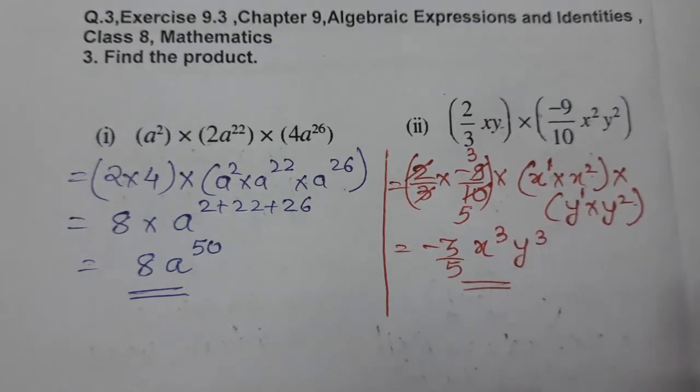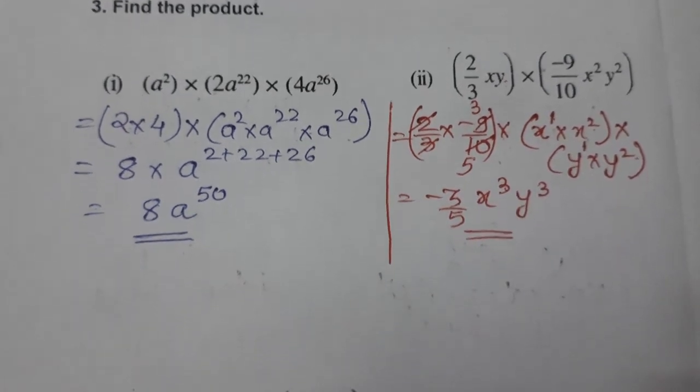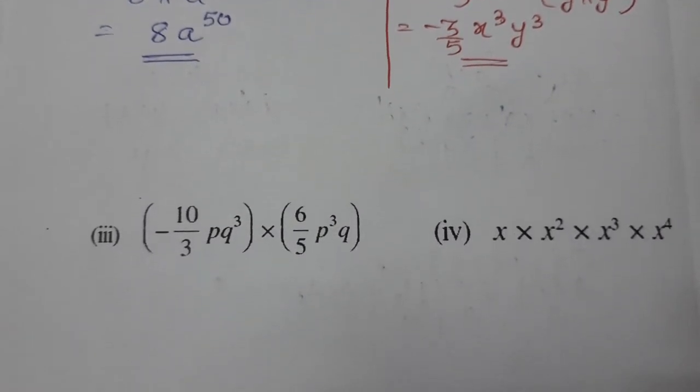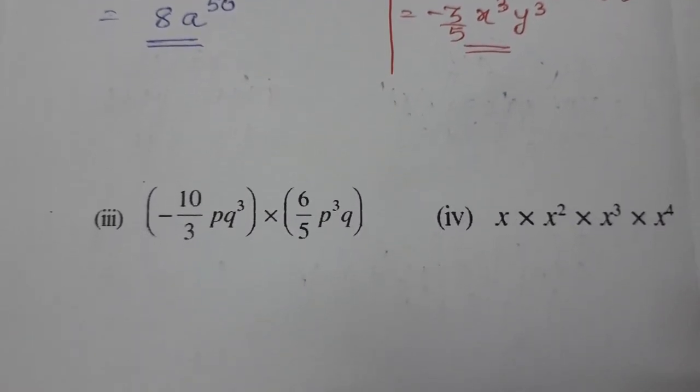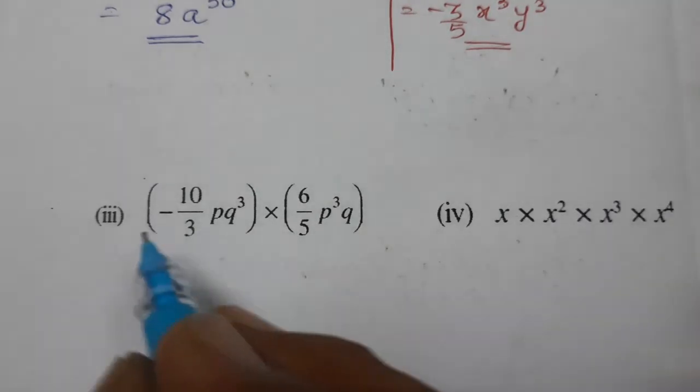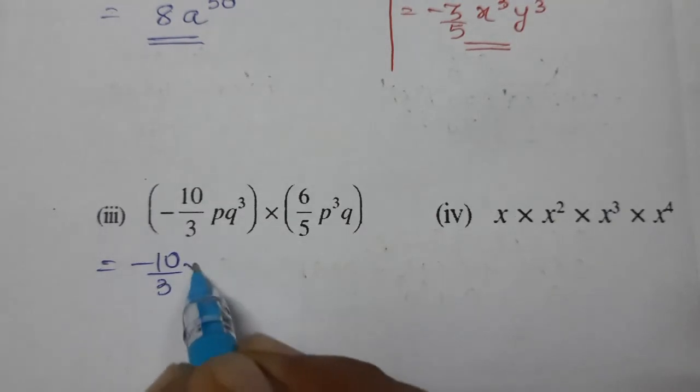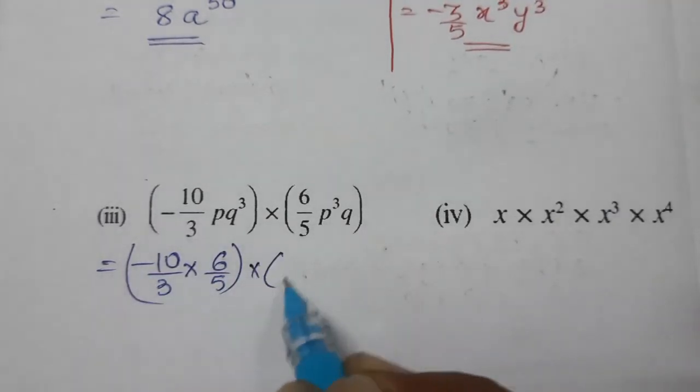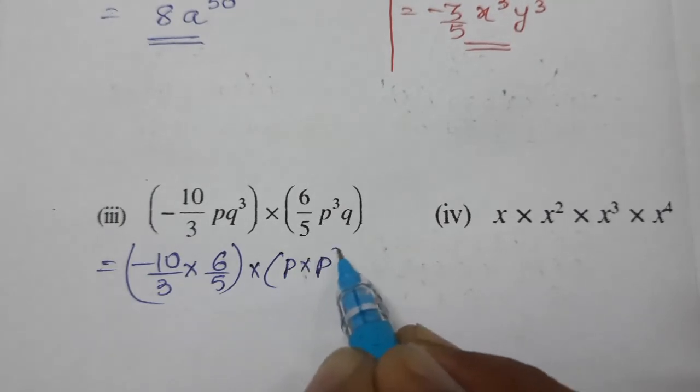Now we'll do the third one. So what is the third one? See, -10/3 pq cubed into... First we multiply fractions with fractions: -10/3 into 6/5. Then p with p and q with q.